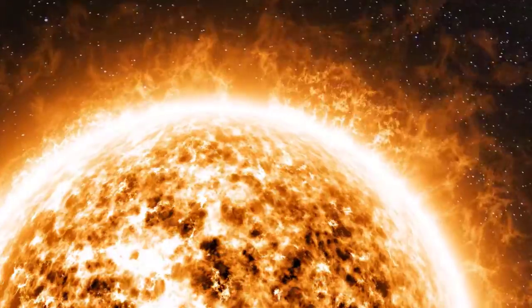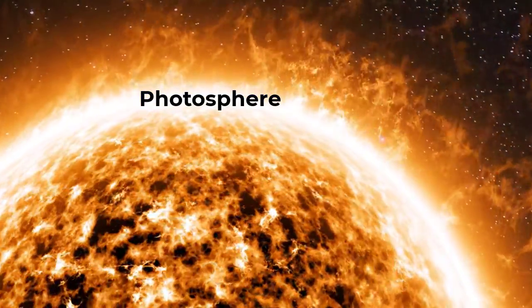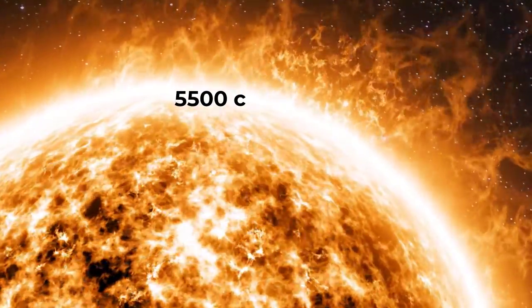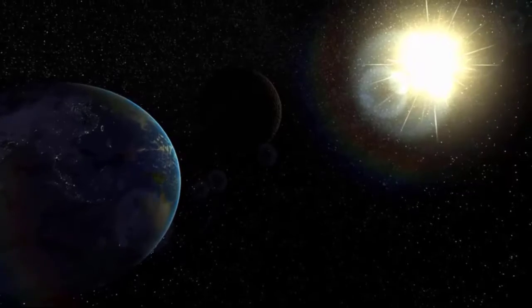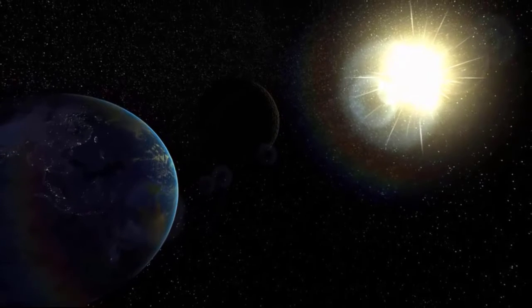The surface of the Sun, called the photosphere, is about 5,500 degrees Celsius. This is the region where the light and heat we experience on Earth are generated.